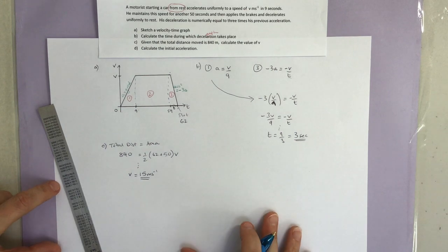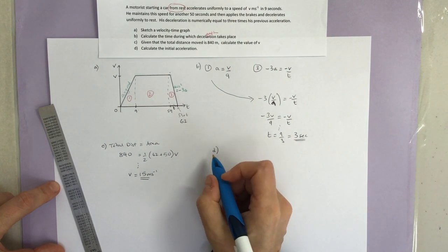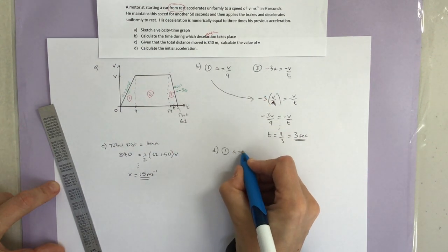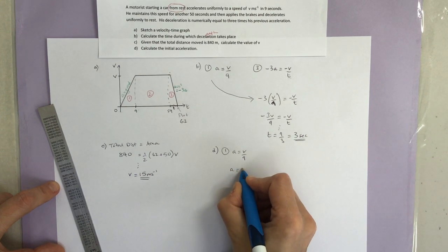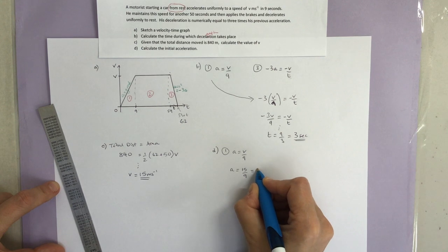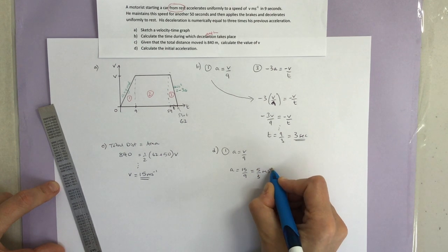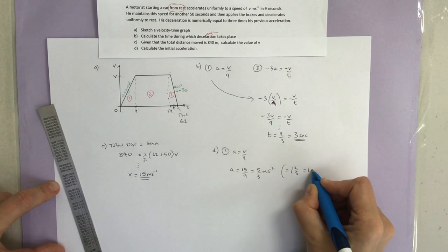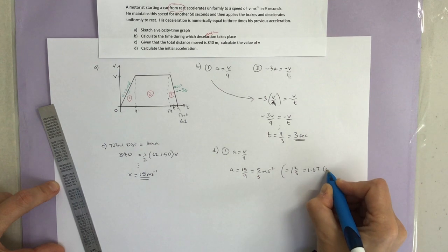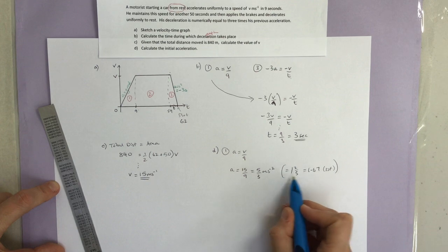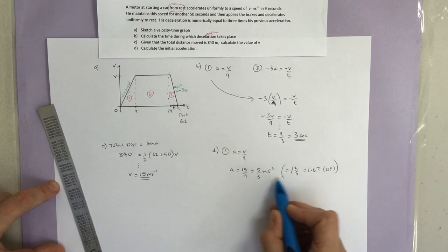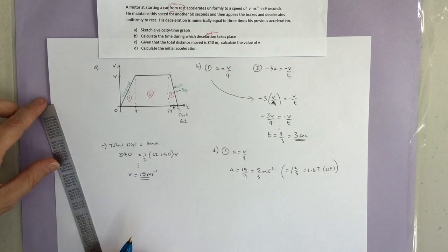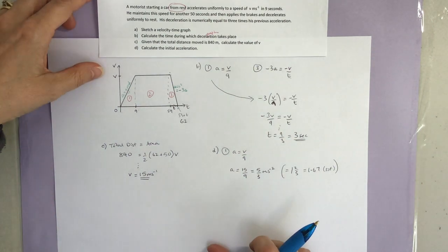The last part should follow on quite straightforwardly. Part D says find the initial acceleration — that was the acceleration in part one. We had A equals V over 9. I now know that V is 15, so my acceleration is 15 over 9, which is 5 over 3 metres per second squared. I could also write that as 1 and two-thirds, or 1.67 to 3 significant figures. As long as we've shown our working, how we give the final answer is our choice.